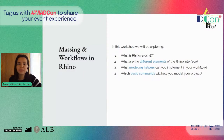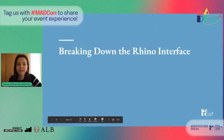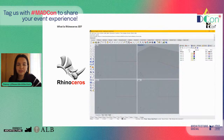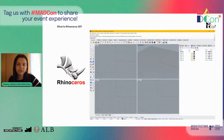In today's workshop, we'll be going over these topics and answering these questions: What is Rhinoceros? What are the different elements of the Rhino interface? What modeling helpers can improve your workflow? And which basic commands will help you model and create your project? Let's start with a quick introduction to Rhino and breaking down its interface. Rhino is a 3D modeling software that primarily focuses on surface modeling and is used by many disciplines apart from architecture, such as engineering, industrial design, and jewelry design. This is the first screen you'll see once Rhino is open — the Rhino interface is divided into different areas that either give you information or prompt you for information to produce a result.